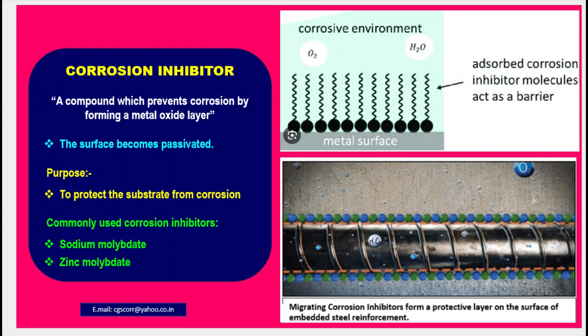Corrosion Inhibitor: A compound which prevents corrosion by forming a metal oxide layer, causing the surface to become passivated. Purpose: to protect the substrate from corrosion. Commonly used corrosion inhibitors include sodium molybdate and zinc molybdate. The figure on the right top side gives an overview of the role of an inhibitor — the inhibitor is adsorbed on the metal surface, protecting it from the electrolyte or environment. Migrating corrosion inhibitors form a protective layer on the surface of embedded steel reinforcement.